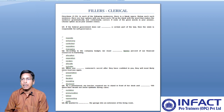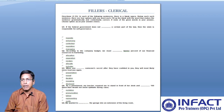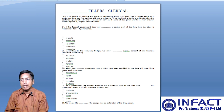What is the statement trying to convey? If the federal government does not dash a certain part of the law, then the state is responsible for self-governance. It means if the government is not trying to initiate a particular action, the state will be responsible for self-governance. Option one, regulate, seems to match, whereas enhancing, controlled, regulation, or managing don't have proper meaning when fitted to that blank space.